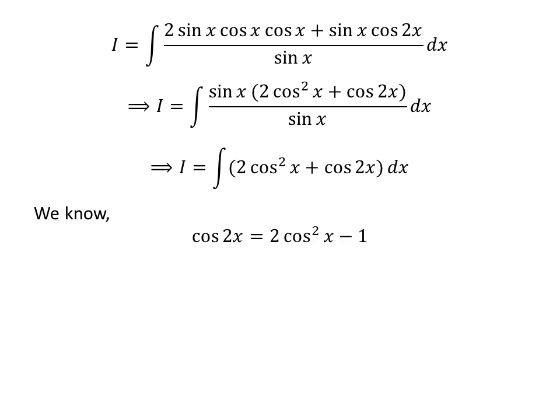We apply the trigonometric identity cos(2x) = 2cos²(x) − 1. A video explaining the proof of this identity is also referenced in the description. Therefore, 2cos²(x) = cos(2x) + 1.